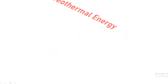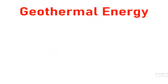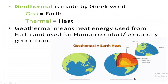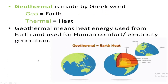First, we are going to learn geothermal energy. There is hot water always present below the rocks, which enters through one well and gets converted into steam. It passes through the turbine, electricity is generated, and the cooled water is passed through another well into the ground. This is called geothermal energy.